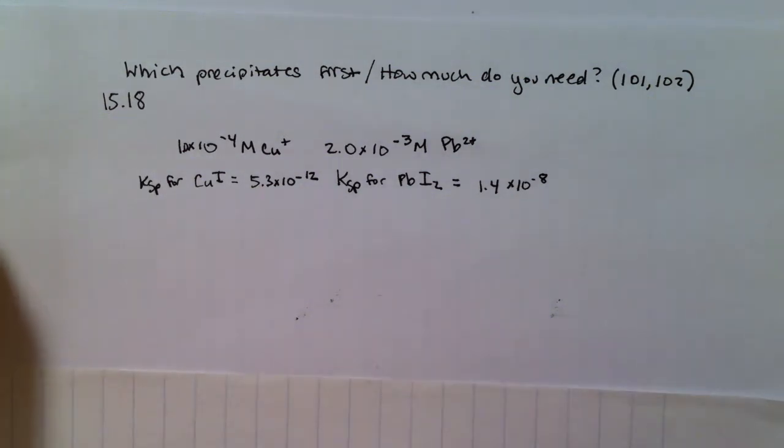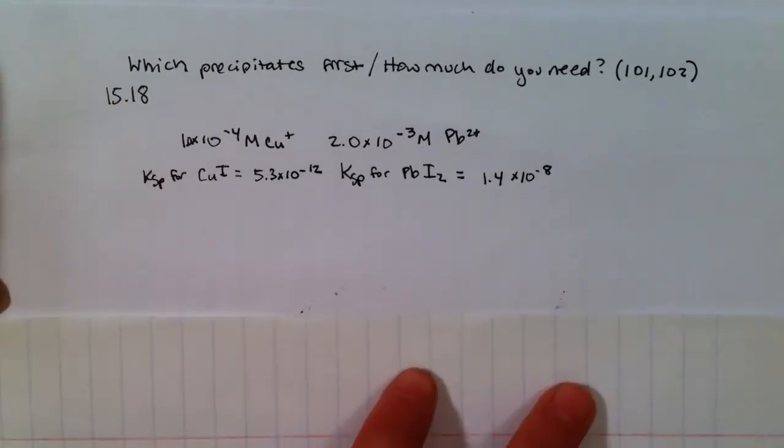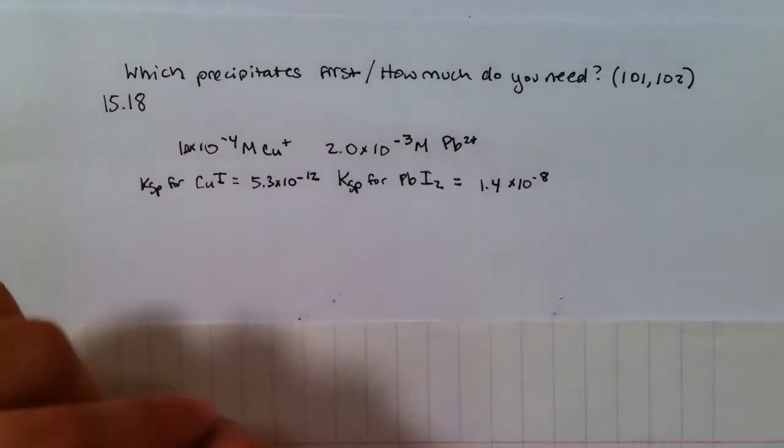Okay, the next type of problem that we looked at was example 15.18. What we're asked in this problem is to figure out which one of these ions, when I add some iodine to it, will precipitate first.